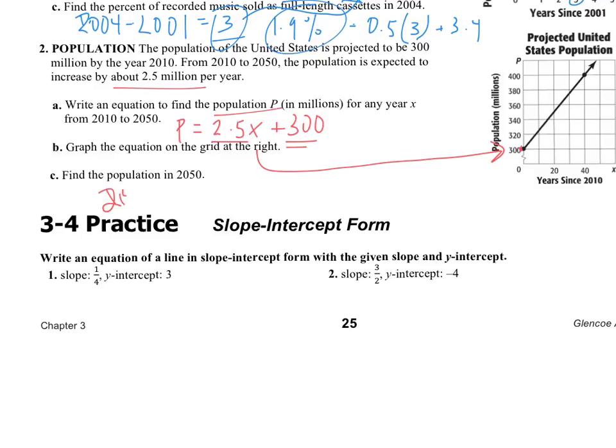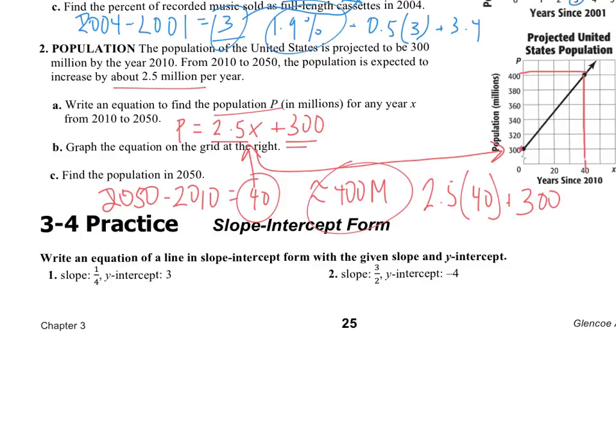It wants me to find the population in 2050. 2050, if you subtract that from 2010, that equals 40. We have to figure out year number 40, which is right here. It looks like on this line, that's all the way over here. Find the population in 2050. We will say the population is roughly 400 million. If we wanted to be very precise, we take 40, we plug that into our equation, 2.5 times 40 plus 300, and we end up with this 400.